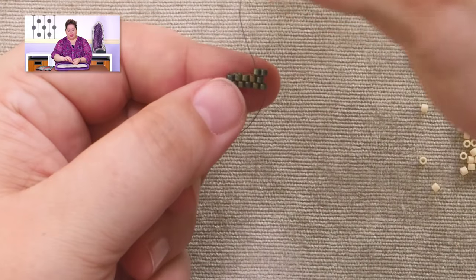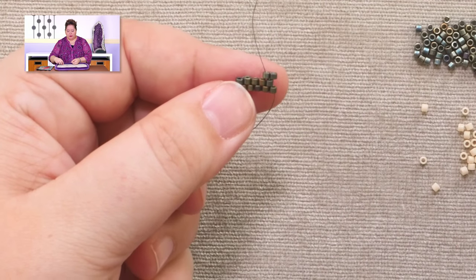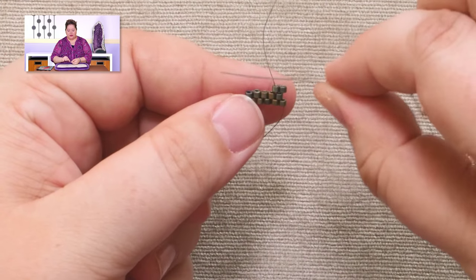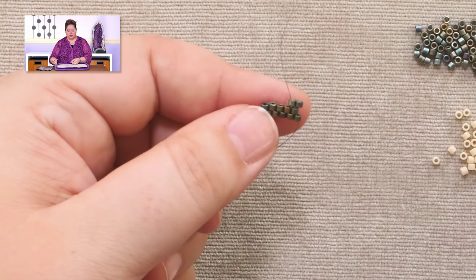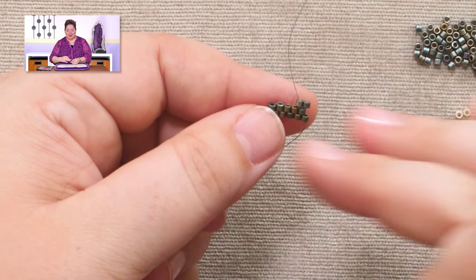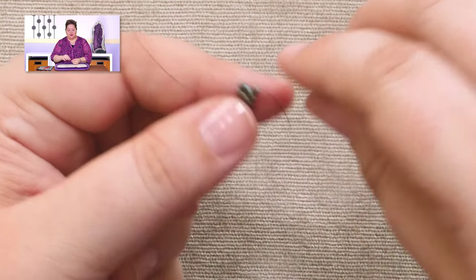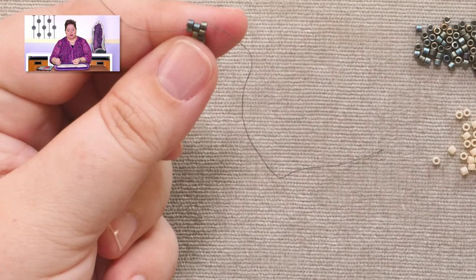So then you're just going to keep adding rows. And then if you like to keep track of your numbers, every fifth or tenth row, you would use an alternate color of your beads. And then when you're done, you've got your perfect starter strip.